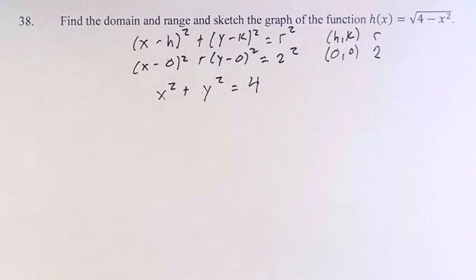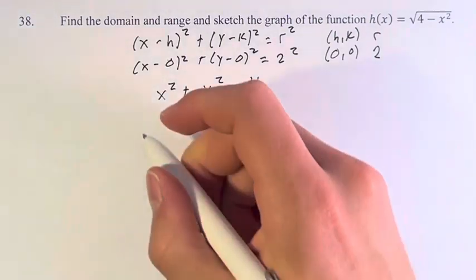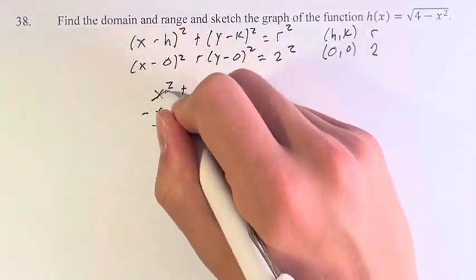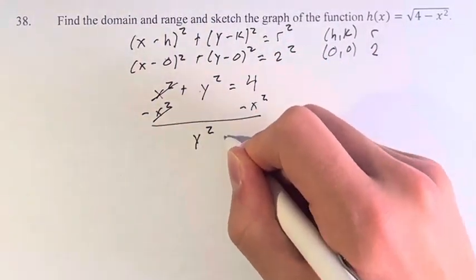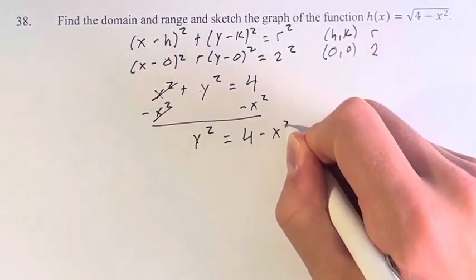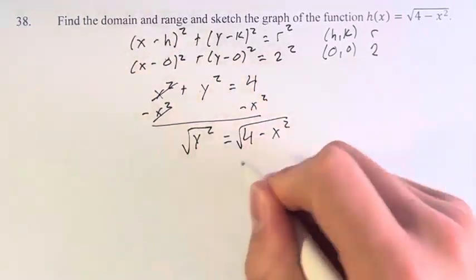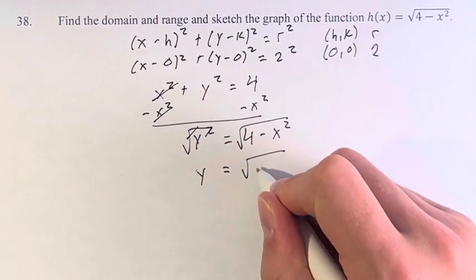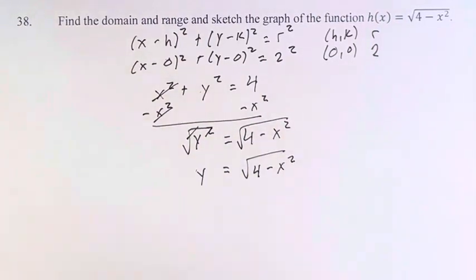We're looking to graph this function, so we're getting y on its own. We subtract x² from both sides. These cancel and we're left with y² = 4 - x². Taking the square root to get y on its own, y = √(4 - x²).